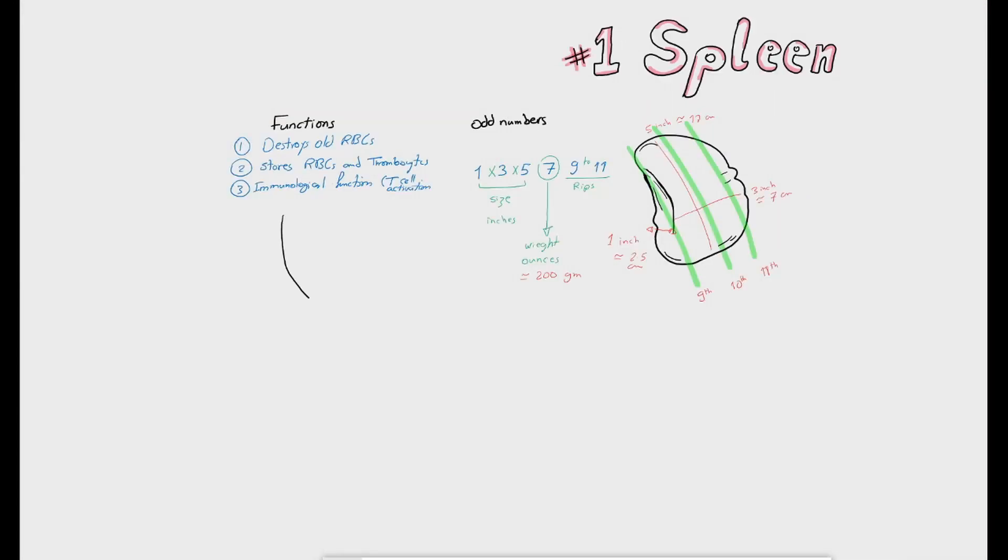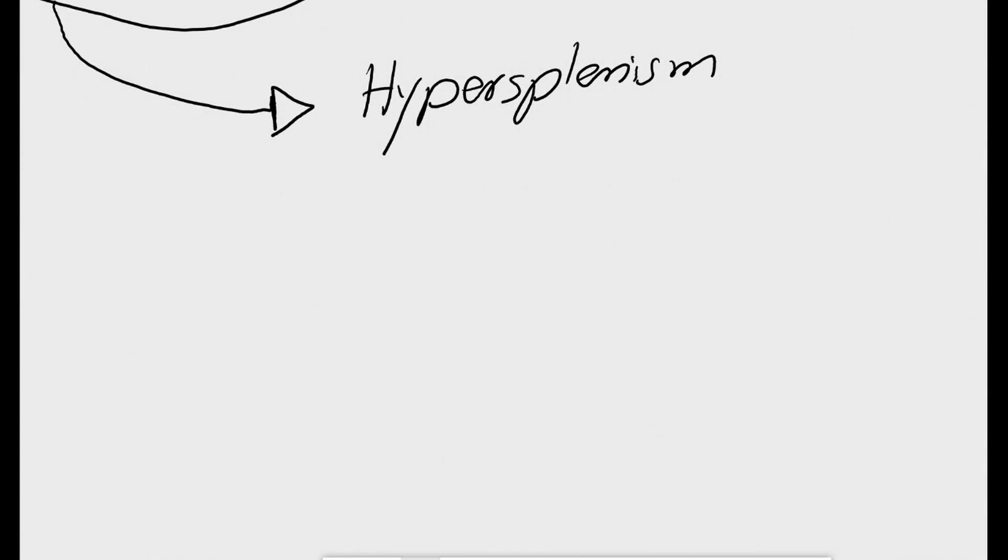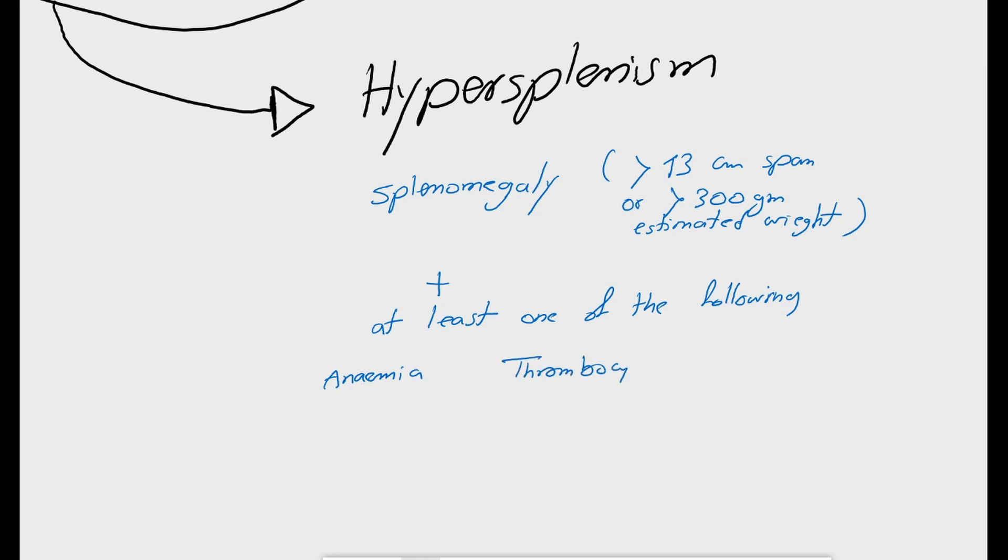Now let's link the basic knowledge with the clinical practice. Our first topic is related to the shape and the function of the spleen: hypersplenism. It is simply an increase in the splenic volume and function. Splenomegaly when the spleen is more than 13 centimeters in span or 300 grams as an estimated weight plus increased function of destruction of the blood components like RBCs, anemia, platelets, thrombocytopenia and white blood cells, leukopenia or sometimes the three together which is called pancytopenia.